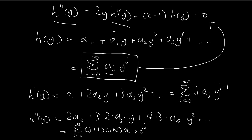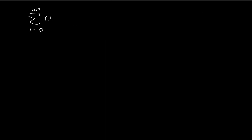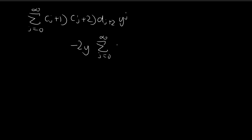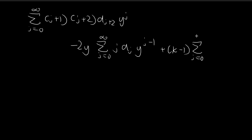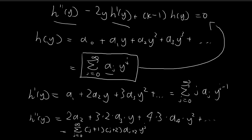Now all we have to do is substitute these terms back into the differential equation. So h double prime of y becomes this expression. Then we have minus 2y times h prime of y, where h prime of y is the summation of j times a_j times y to the j minus 1. And then we have plus (k minus 1) times h of y, which is the summation of a_j times y to the power of j, all equal to 0.